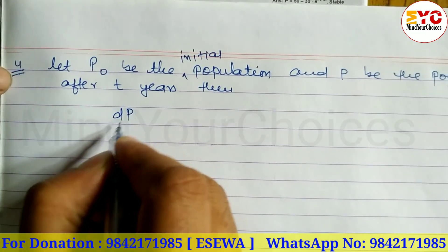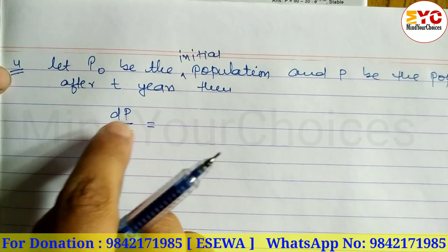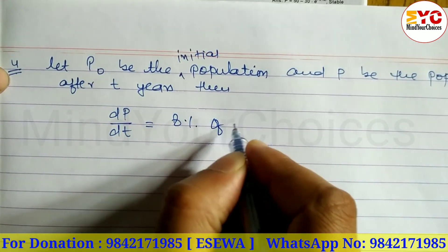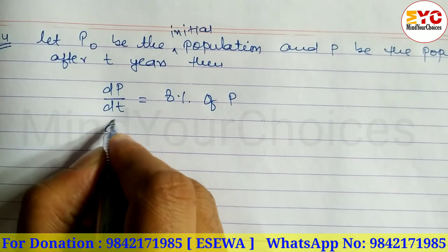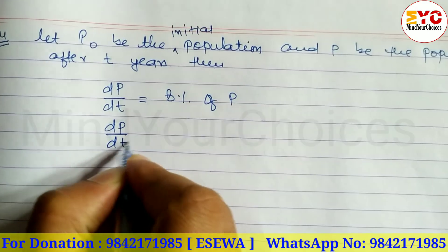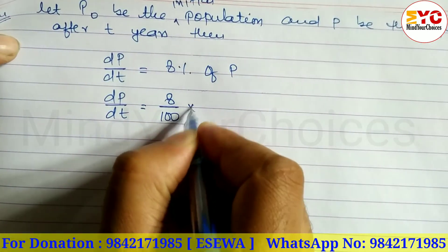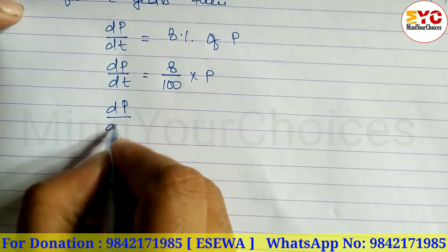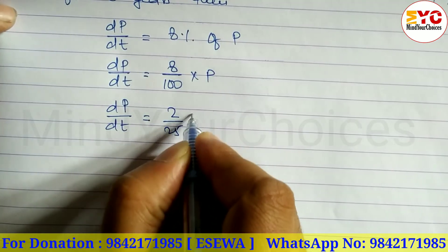Then dP by dT is equal to what? How do we find the differential equation? 8% increase. Now dP by dT is equal to 8 by 100 into P. So dP by dT is equal to 2 by 25 P.